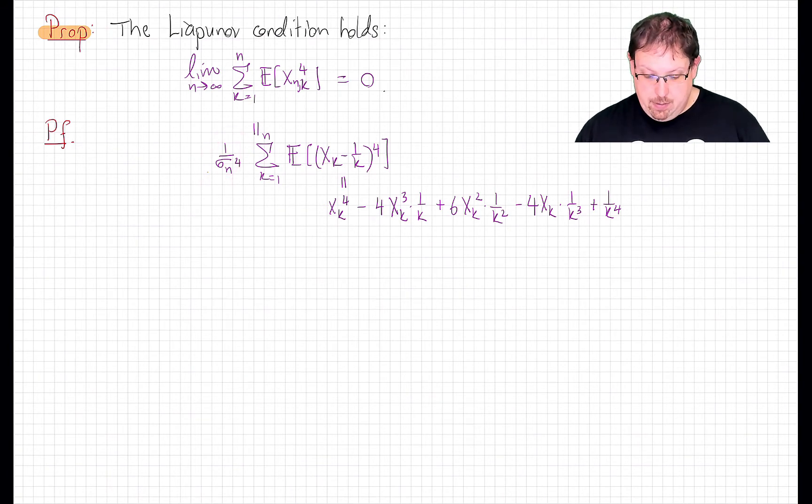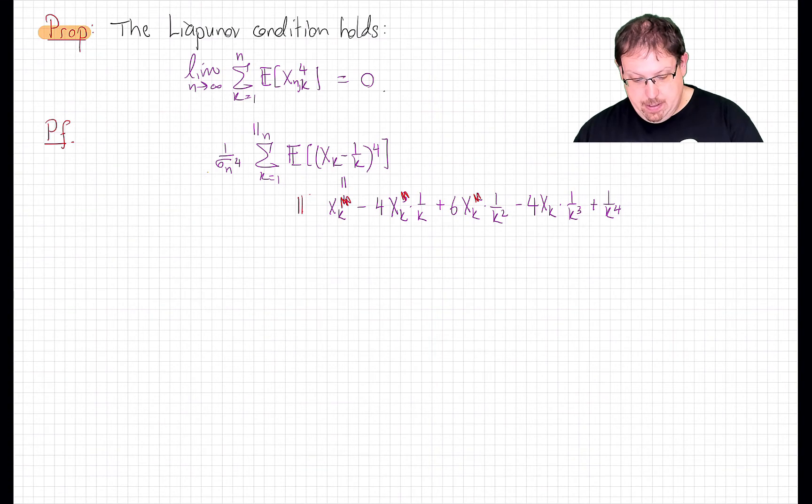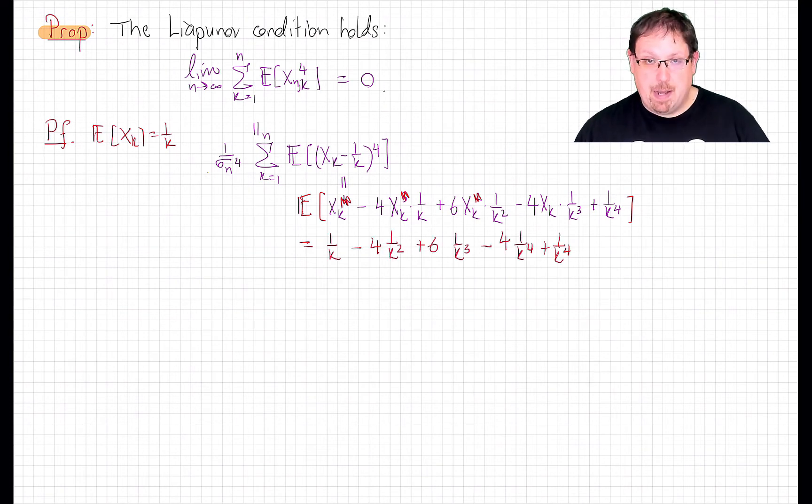We'll pull that sigma_n out front of the sum over k, and now expand X_k minus 1 over k to the fourth, with the binomial expansion. Now notice again that any positive power of a Bernoulli random variable is equal to that Bernoulli random variable itself, since it's 0, 1 valued. And so taking expectations of that, using the fact that X_k has expected value 1 over k, this is equal to this linear combination of reciprocal powers of k.